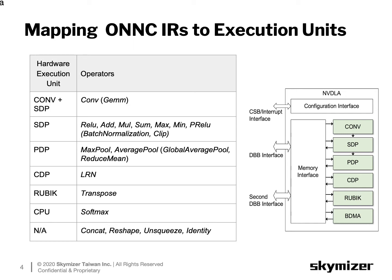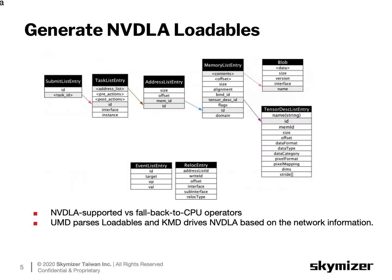In most cases, the compiler is responsible for mapping ONNX IRs to hardware execution operations on the target hardware and uses optimization passes to reduce the amount of computation for performance improvement. Next, let's talk about the output of the NVIDIA backend. When we compile an AI model using the NVIDIA backend, we emit loadable files.